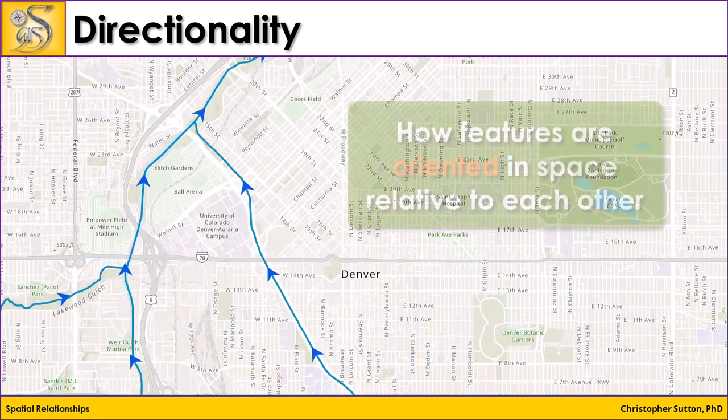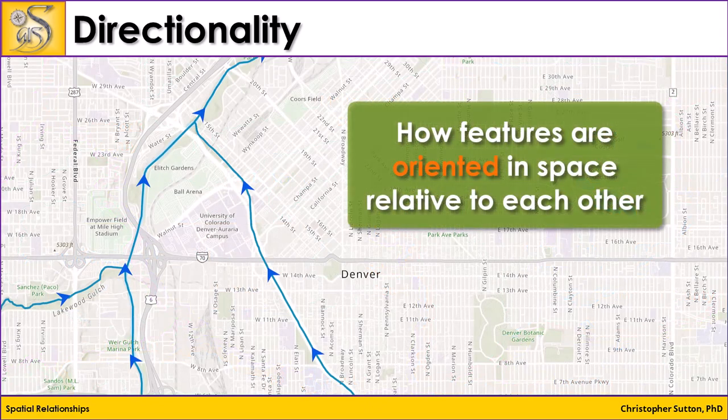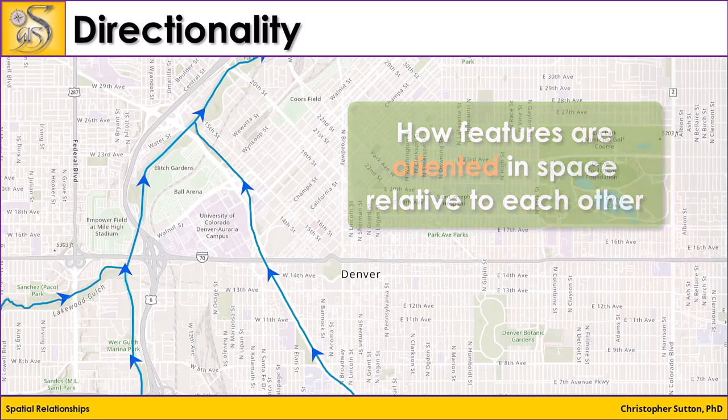Understanding how features are oriented in space relative to each other can be important. For instance, the direction of flow of a river might be important to locations along that river, because things flow downstream — which could be floodwaters, pollution, or other things. If you know whether you're upstream or downstream from a phenomenon, you might or might not be affected by it.